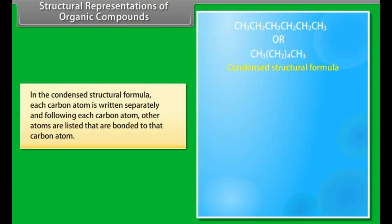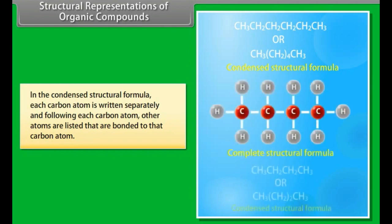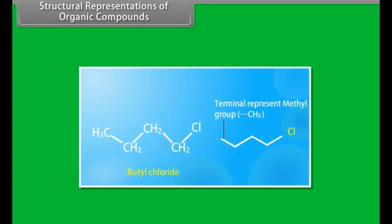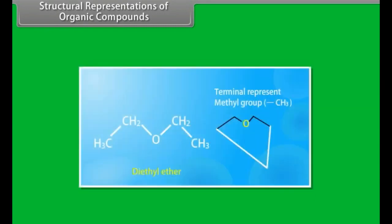In the condensed structural formula, each carbon atom is written separately, and following each carbon atom, other atoms bonded to that carbon are listed. In bond line structures, carbon and hydrogen atoms are not shown, but only the bonds between carbon-carbon atoms are shown in zigzag fashion. Atoms other than carbon and hydrogen are shown in the structure, and the terminals denote methyl groups. For example: butyl chloride, propene, cyclohexane, diethyl ether.